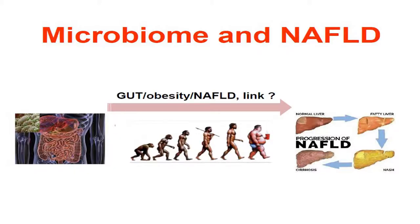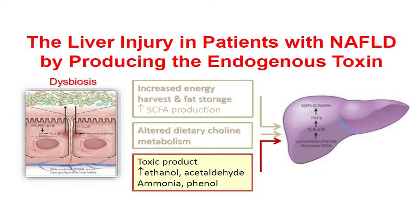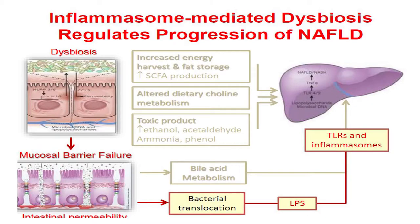I would like to talk about the microbiome and NAFLD. People are talking more and more about the microbiome, the gut-liver axis, and dysbiosis — that is, changes in the gut microbial population can lead to fatty accumulation in the liver because of the endotoxins produced by the gut microbiome. There is also an altered bile acid metabolism in NAFLD.